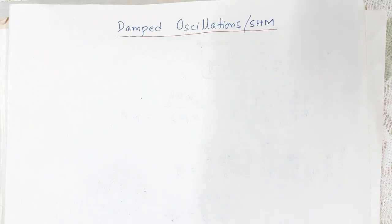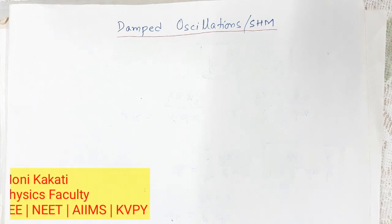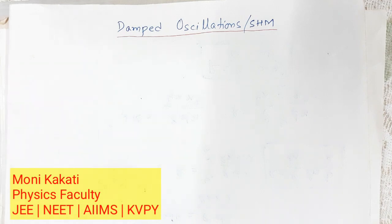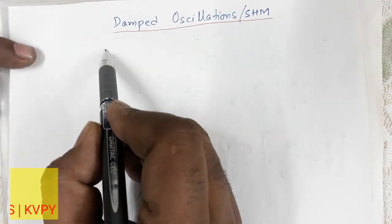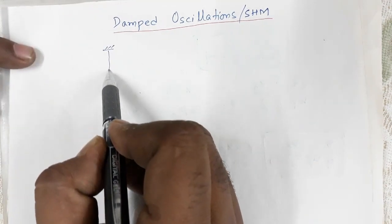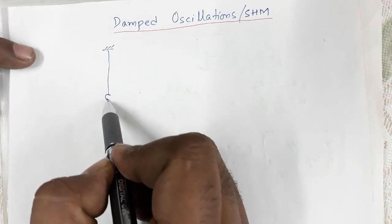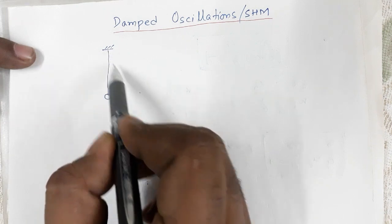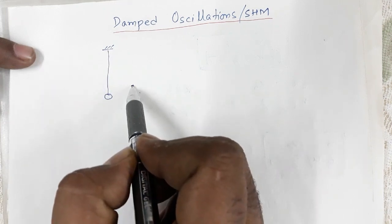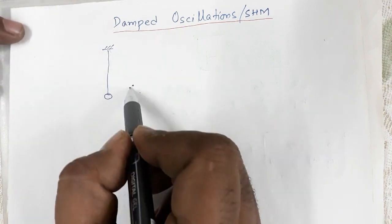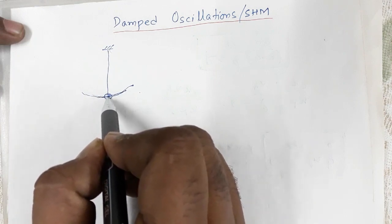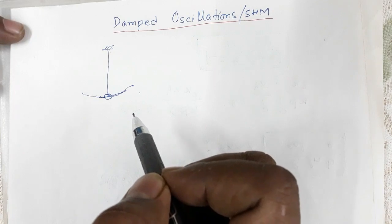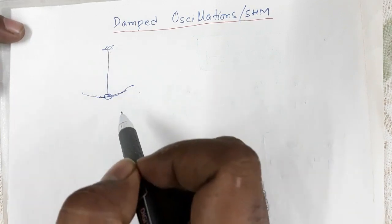Welcome to this video on damped oscillation or damped simple harmonic motion. Basically, all oscillations are damped. Consider a fixed rigid support with a simple pendulum. If it is displaced to a particular position and left to itself, it will start oscillating, but the amplitude of oscillation will decrease continuously and finally it will come to rest. This kind of motion is called damped oscillation.